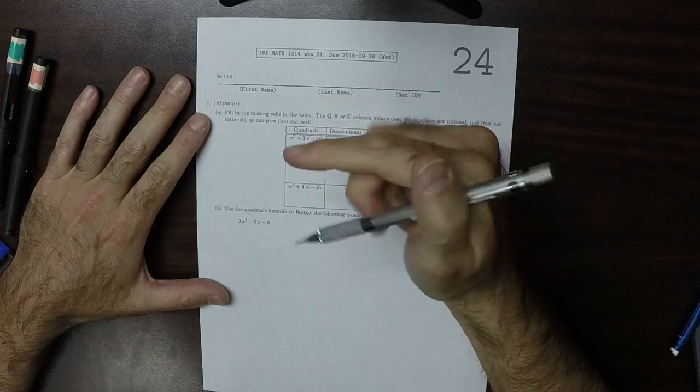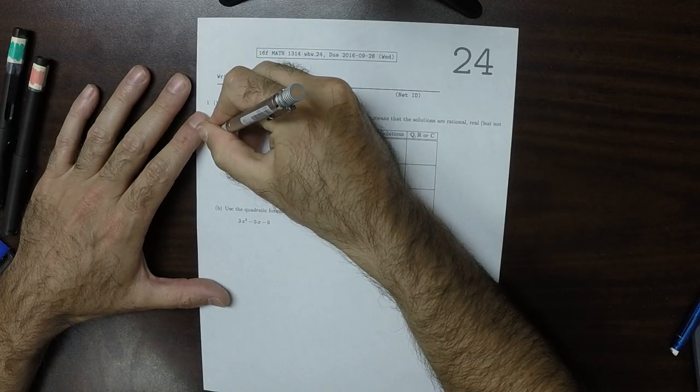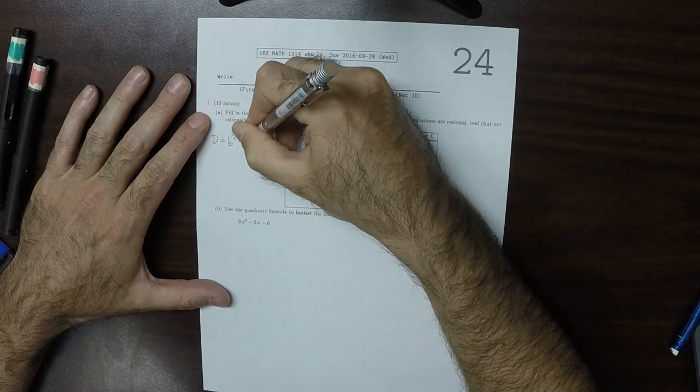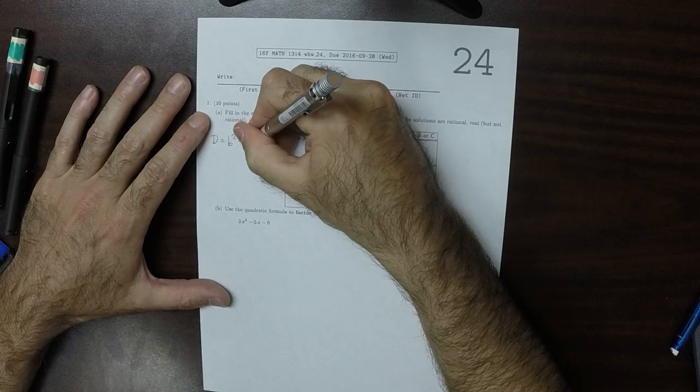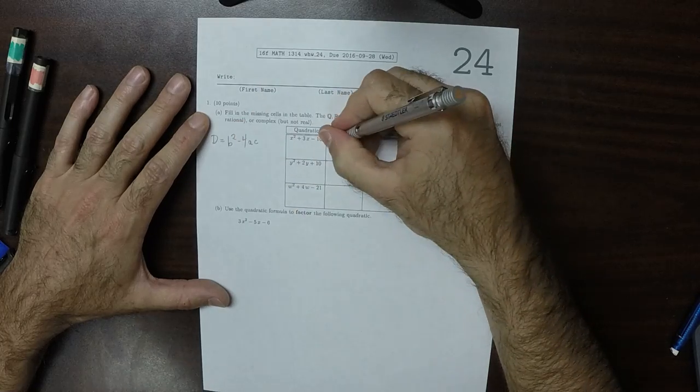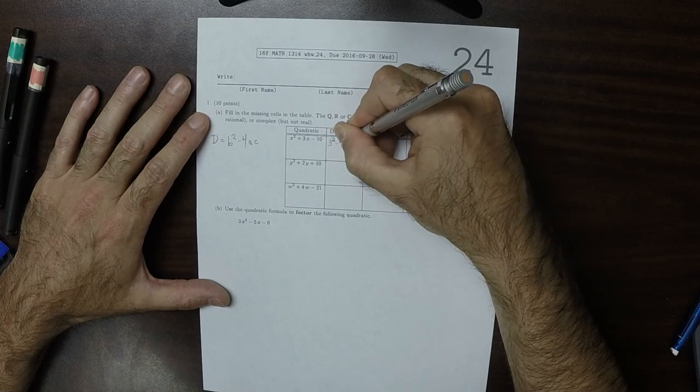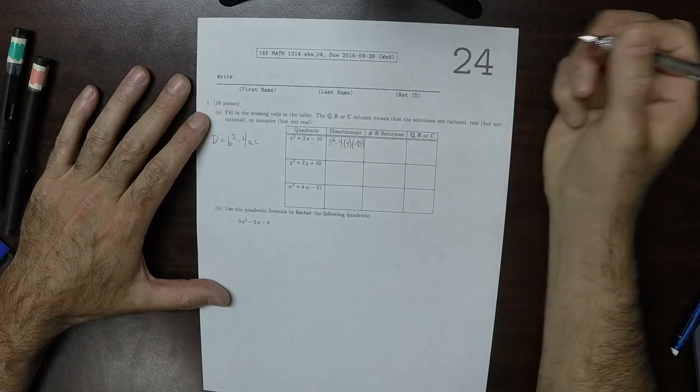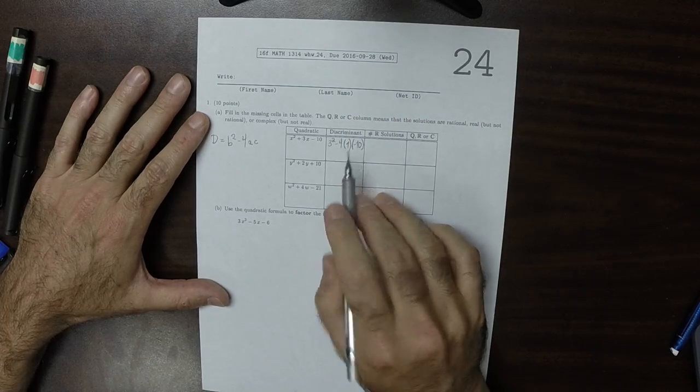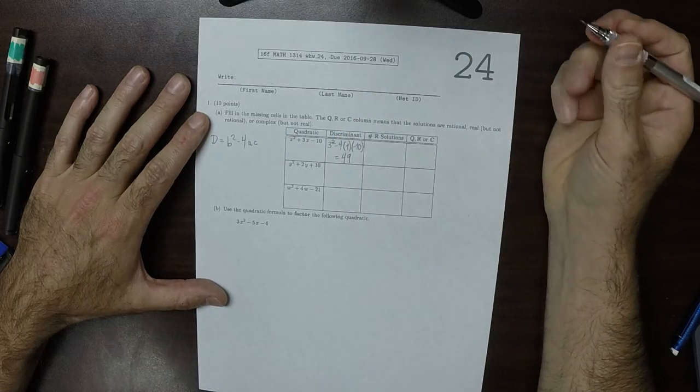So the discriminant here, remember the discriminant formula is b squared minus 4ac. So for this quadratic, that would be 3 squared minus 4 times 1 times negative 10. So that would be 9 minus negative 40, which is 49. That's the discriminant.